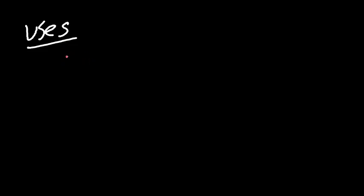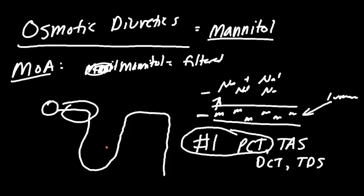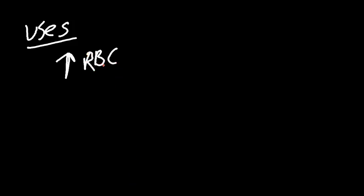Some uses for mannitol: we're going to increase renal blood flow. We're increasing renal blood flow because we're putting water into the lumen, reabsorbing less, and increasing urine output due to the increased solute gradient. When we diurese, our blood detects that we're losing water that would normally be reabsorbed and put back into the bloodstream.